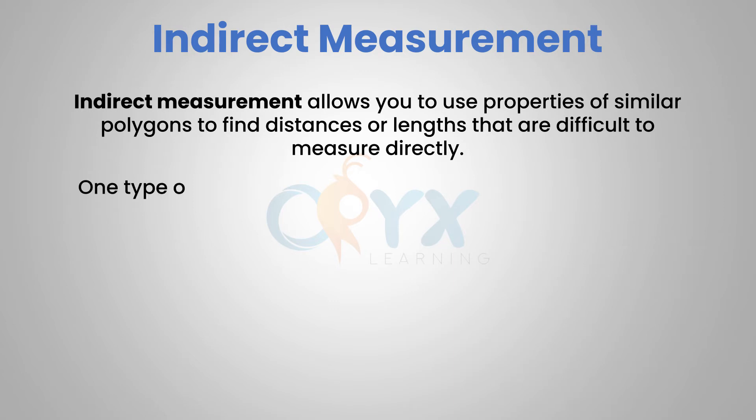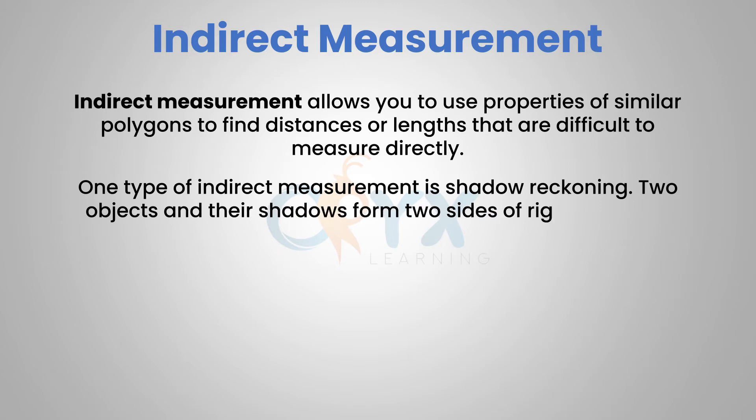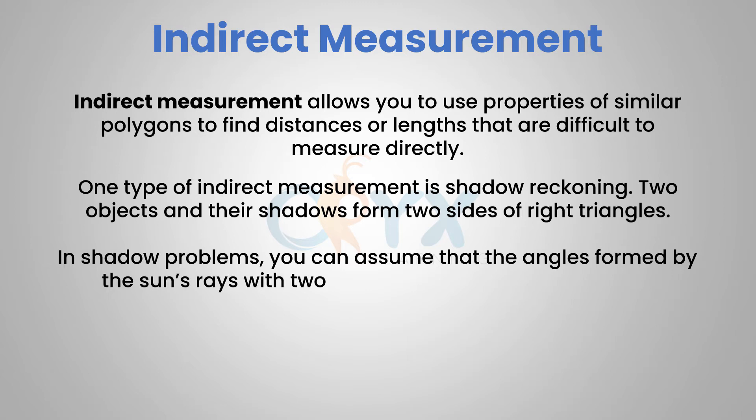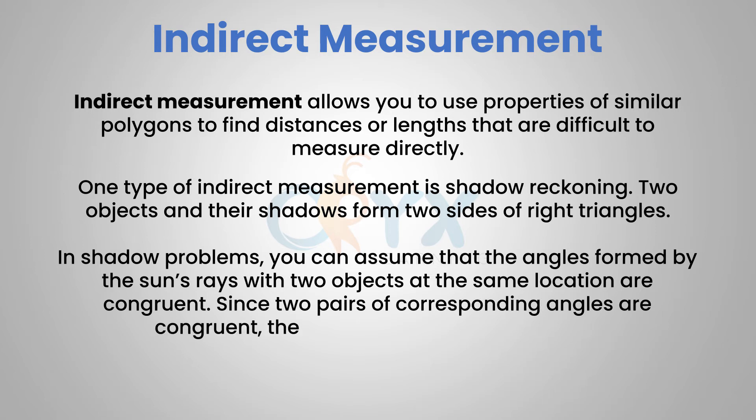One type of indirect measurement is shadow reckoning. Two objects and their shadows form two sides of right triangles. In shadow problems, you can assume that the angles formed by the sun's rays with two objects at the same location are congruent. Since two pairs of corresponding angles are congruent, the two right triangles are similar.